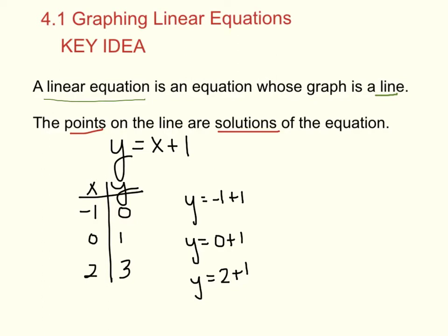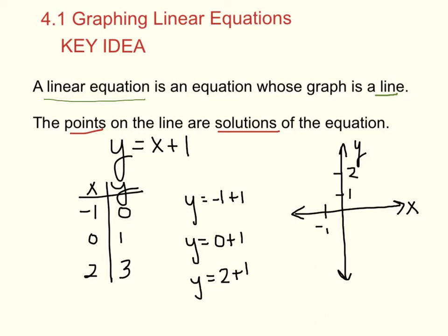If you actually graph these — negative 1, 0; then 0, 1; then 2, 3 — you're going to make a line. All of the points on this line, and there are millions and billions of points on this line, are solutions to this equation.